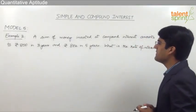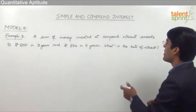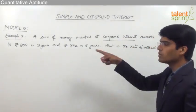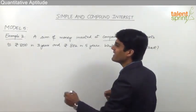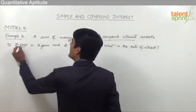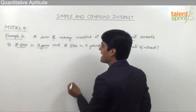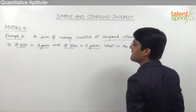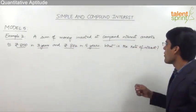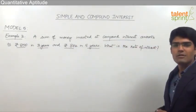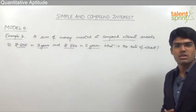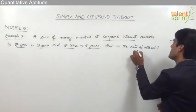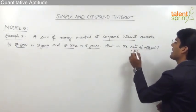A sum of money invested at compound interest amounts to Rs. 800 in 3 years and Rs. 882 in 5 years. What is the rate of interest? Here we are supposed to find out the rate of interest R.